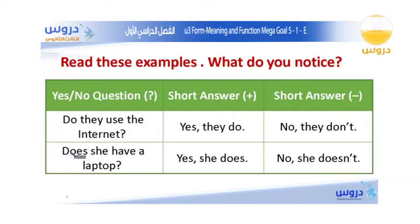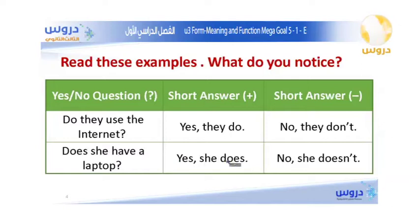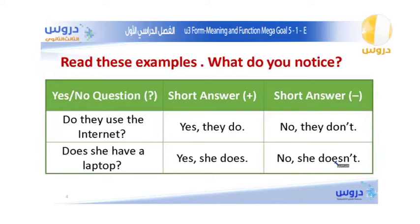The second example: Does she have a laptop? The answers are: Yes, she does. And with no it will be: No, she does not. Or: No, she doesn't. So what did you notice here in these questions?